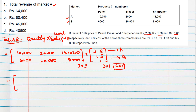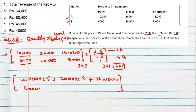For Market A (first row): 10,000 × 2.5, plus 2,000 × 1.5, plus 18,000 × 1. For Market B (second row): 6,000 × 2.5, plus 20,000 × 1.5, plus 8,000 × 1.